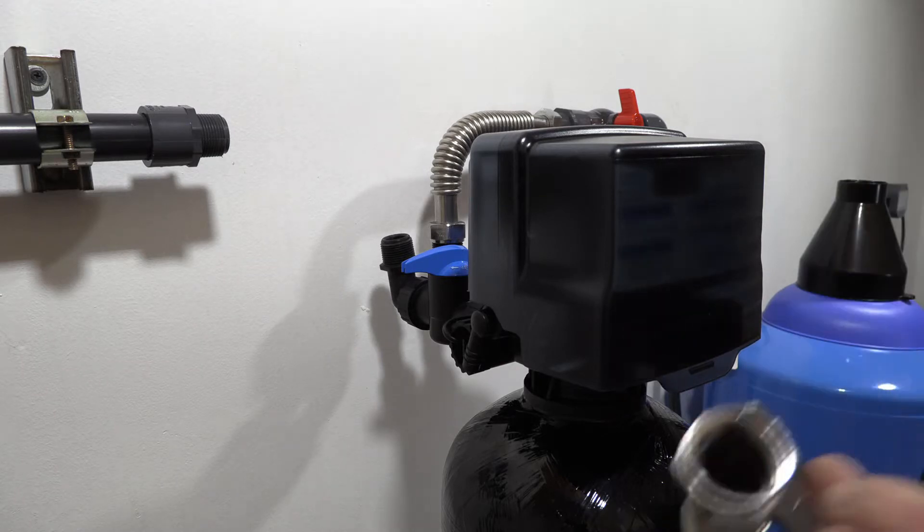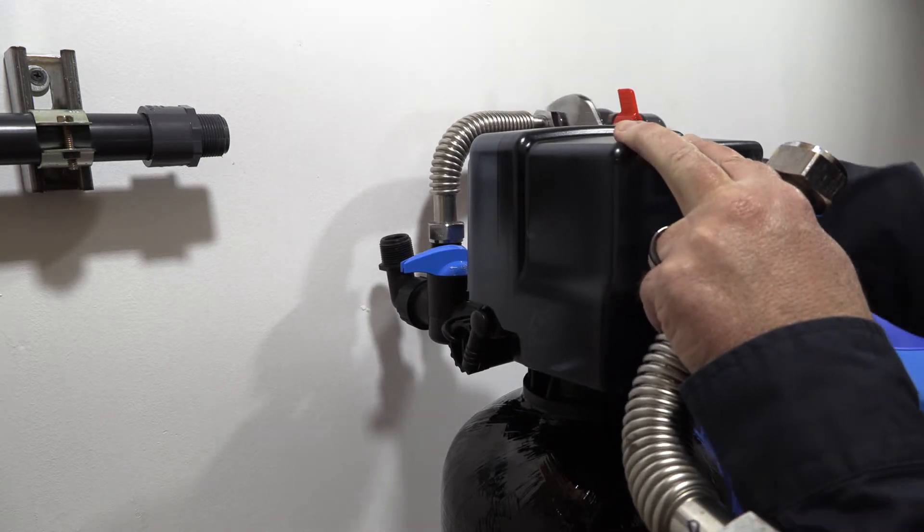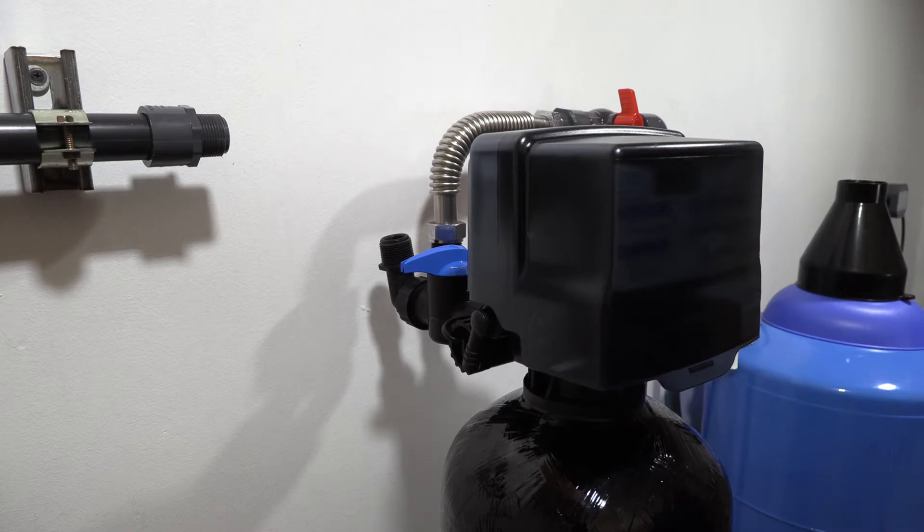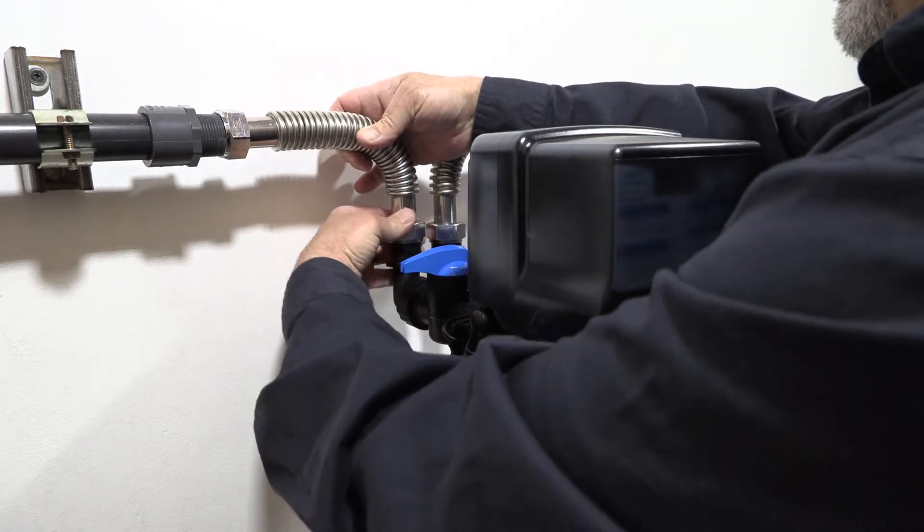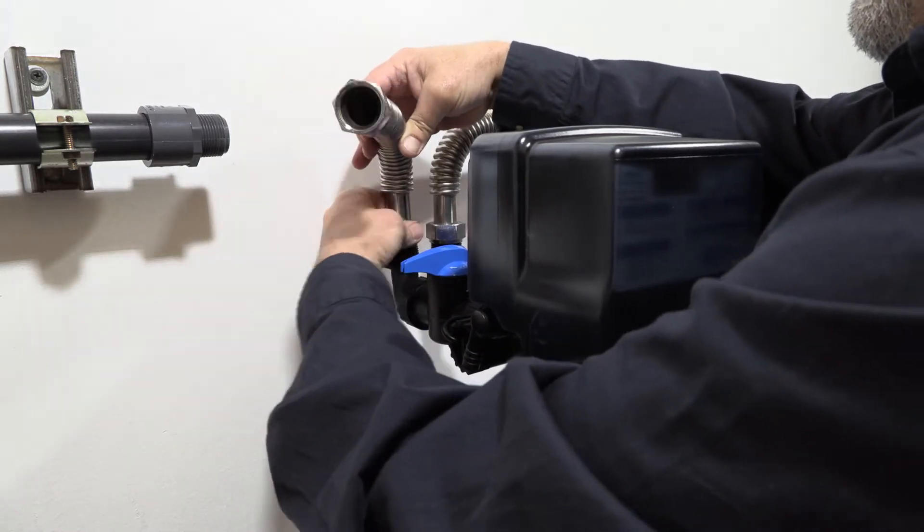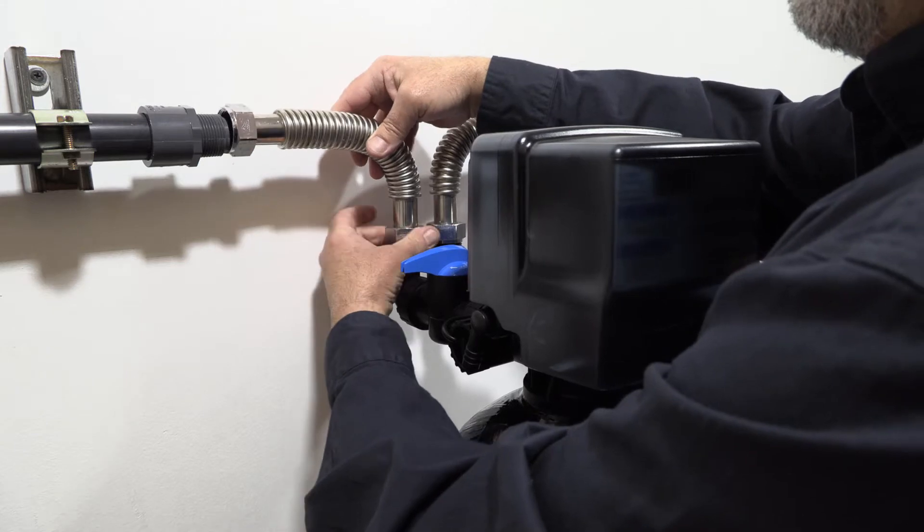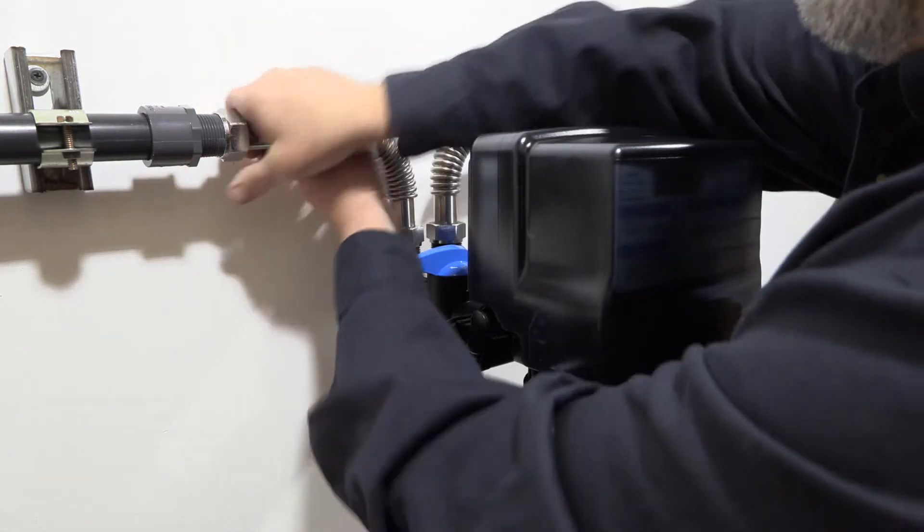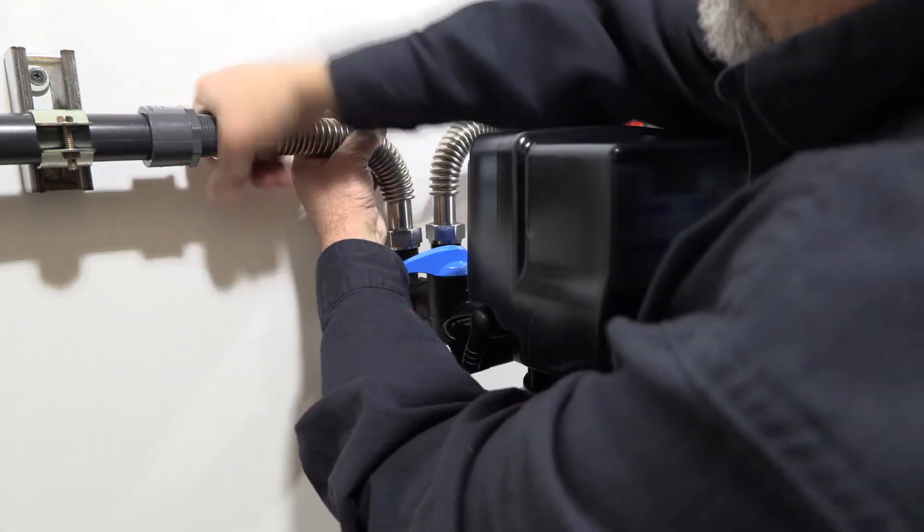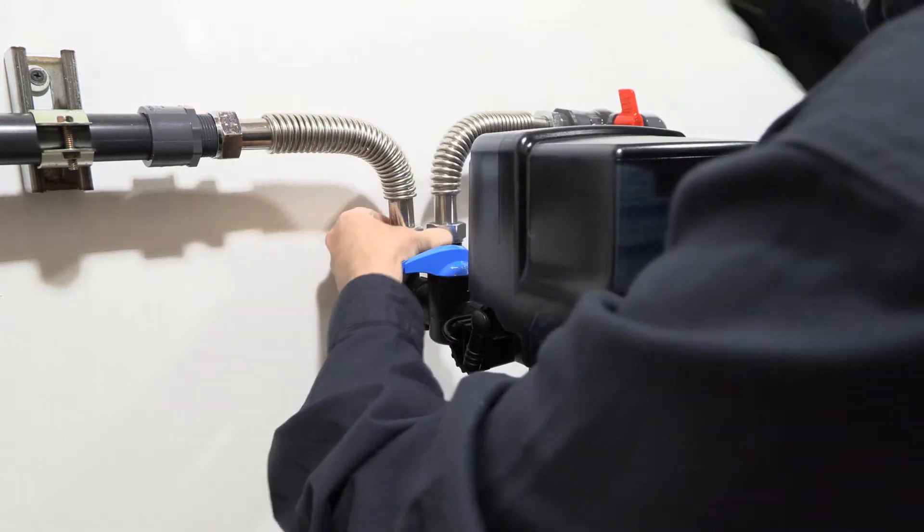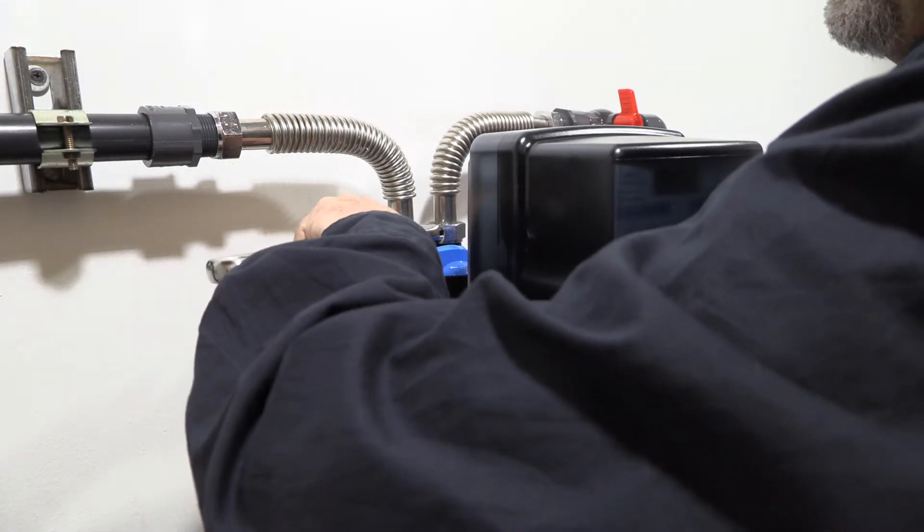These have a little rubber washer inside so you just want to get a little snug on these just to seal them. We'll go ahead and install our outlet and then go ahead and tighten this one as well.